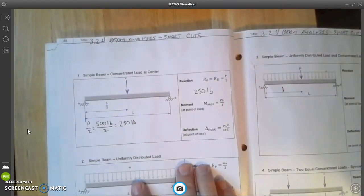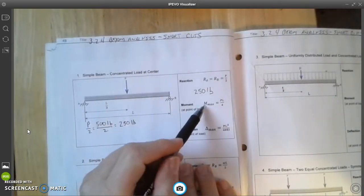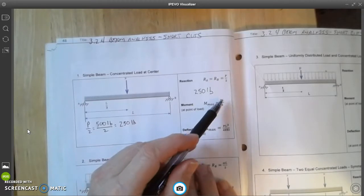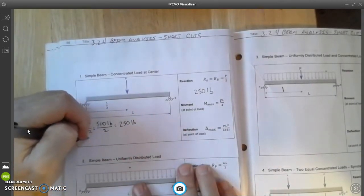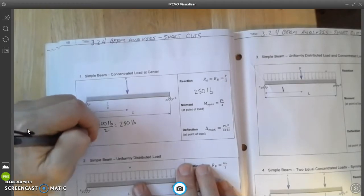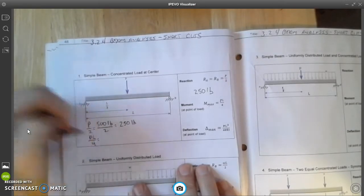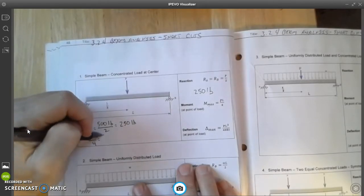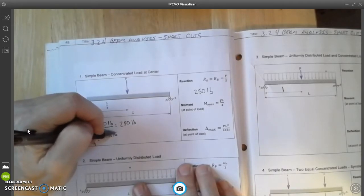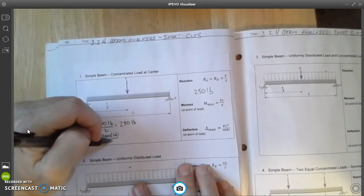Then to calculate the moment, the moment max is going to be p times l divided by 4. So I'm going to write p times l divided by 4. That equals 500 times 16 divided by 4.